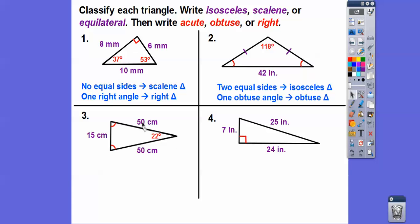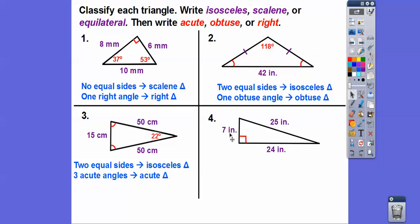This triangle has sides 50 and 50, making it isosceles. The angle of 22 degrees is definitely less than 90, so all angles are acute. Two equal sides and three acute angles: it's isosceles and acute. The last triangle has no equal sides and a right angle — so it's scalene and a right triangle.